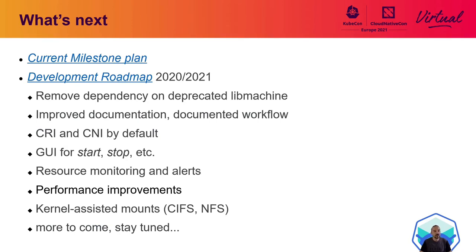What's ahead of us? The plan for the next release is captured in the current GitHub Milestone plan. The development plan for this year includes removal of the dependency on libMachine, which is deprecated and no longer maintained — the last commit was about two years ago. Other plans include documentation improvements, using container runtime interface and container network interface by default, a graphical user interface for start/stop and potentially other commands, future improvements to resource monitoring and alerts, and a goal to go under 15 seconds for cluster startup. The kernel-assisted mounts like CIFS and NFS are also in the plans.